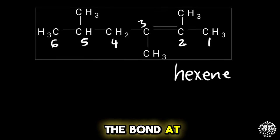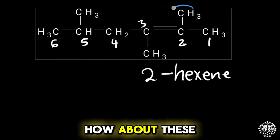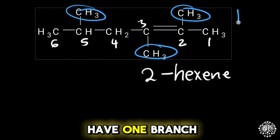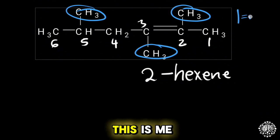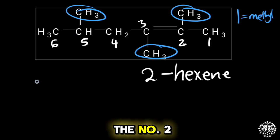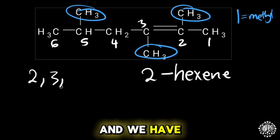How about these here, these branches? Well, when you have one branch like this, it means that this is methyl. But we have three branches: we have at number two, and we have at number three, and we have at number five the same branch.